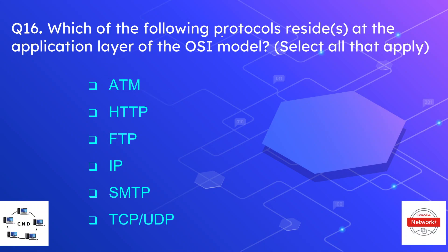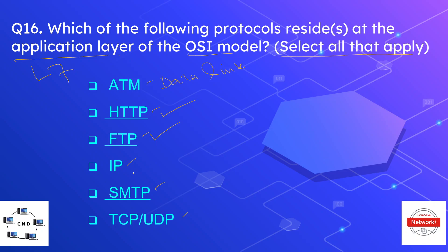Question number sixteen is: which of the following protocols reside at the application layer of the OSI model? Select all correct options — application layer is layer seven. The options are ATM, HTTP, FTP, IP, SMTP, TCP, and UDP. The correct answers are HTTP, FTP, and SMTP — all work at layer seven. ATM works at the data link layer, IP works at the network layer, and TCP/UDP work at the transport layer.